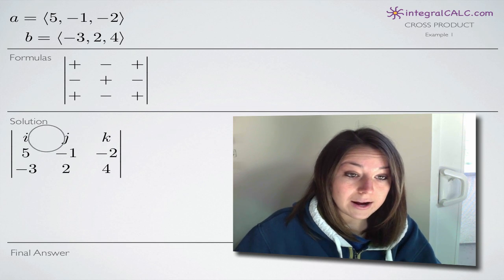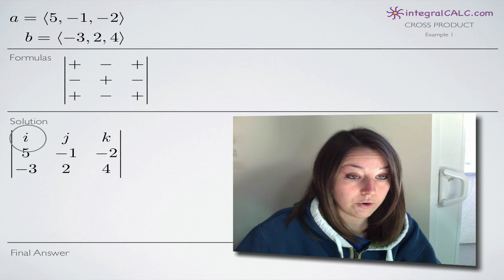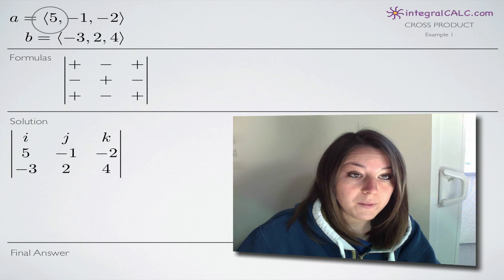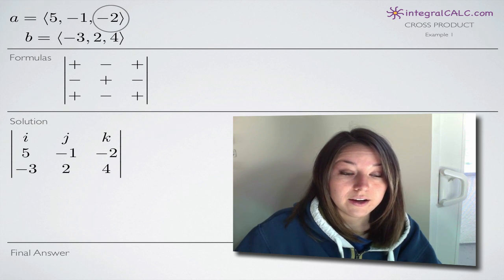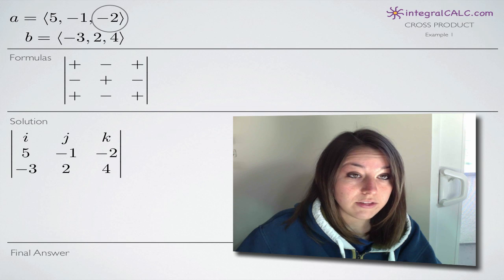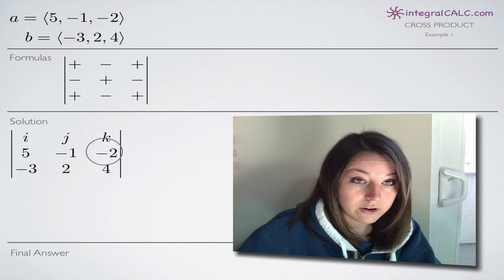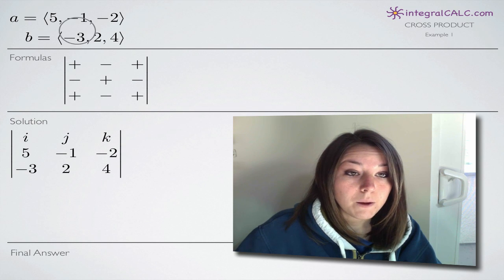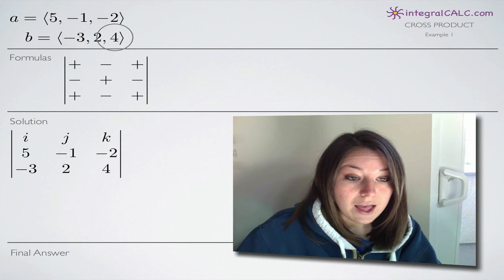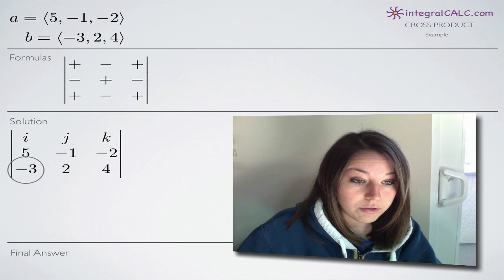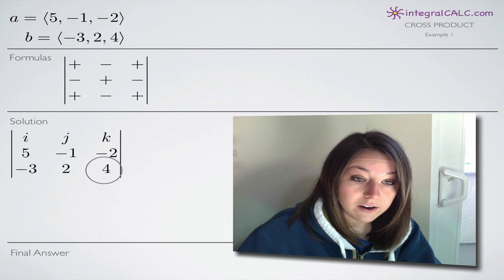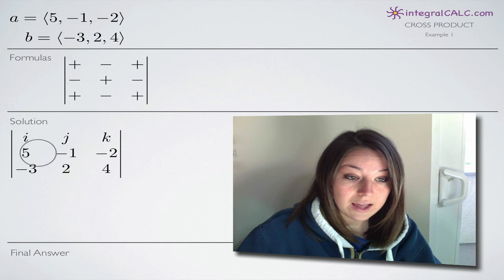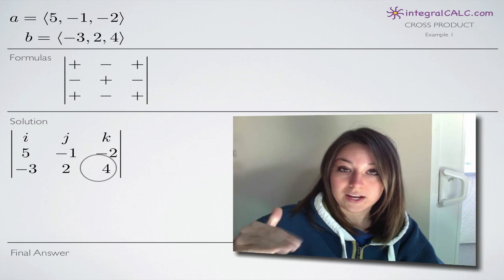We always put i, j, and k in the first row in that order. Then we take the direction numbers from vector a — a1, a2, and a3 — and put them in the second row: 5, -1, and -2. Then we take b1, b2, and b3 and put them in the third row: -3, 2, and 4. That sets up our problem. It's always i, j, k, then a, then b in the first, second, and third rows.